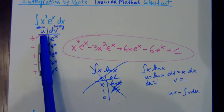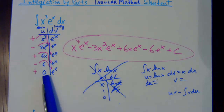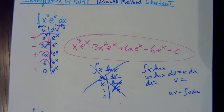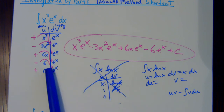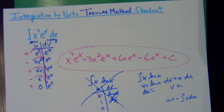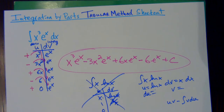You can only use that shortcut when the derivative part goes down to zero. Whenever you can use it, go ahead and use it. If I tell you to use integration by parts and the shortcut applies, you're allowed to use it — that's the tabular method.